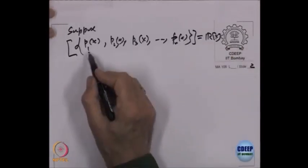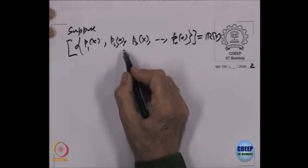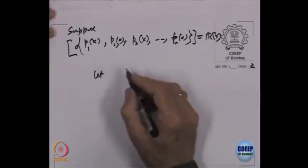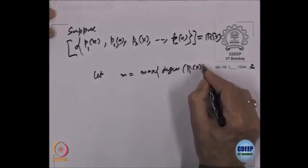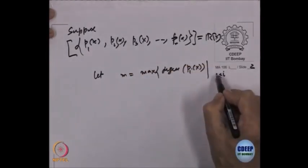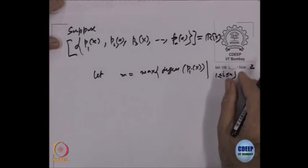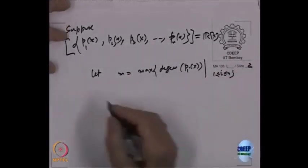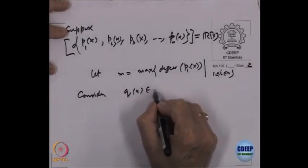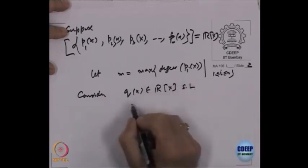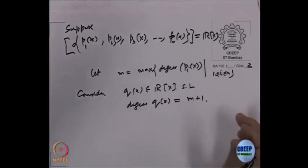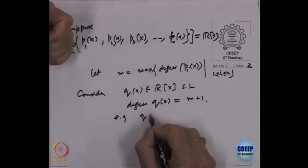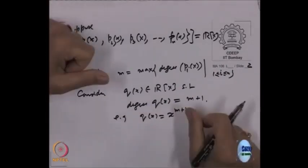Each of P₁, P₂, ..., Pₙ has a degree. Let M be equal to the maximum of their degrees. Since we have a finite number, this M will exist. Now consider Q(x), a polynomial of degree equal to M plus 1 — for example, Q(x) = x^(M+1).